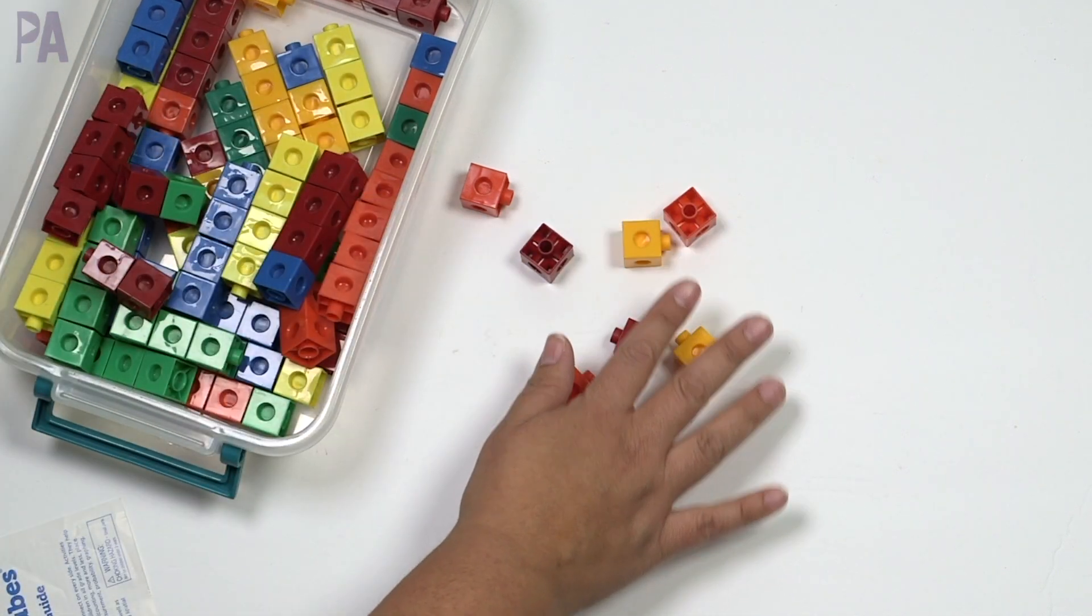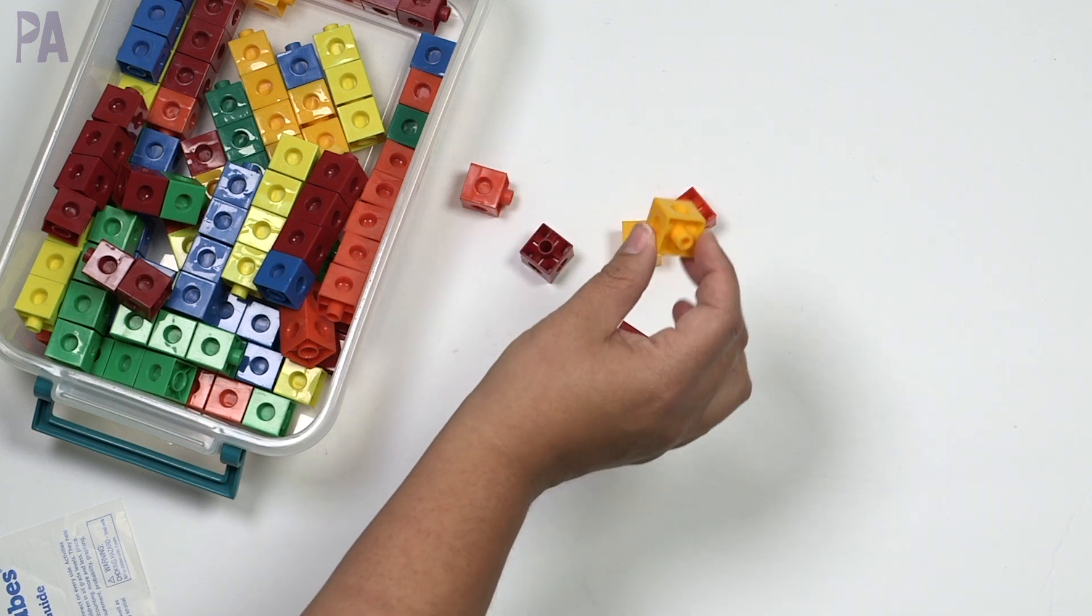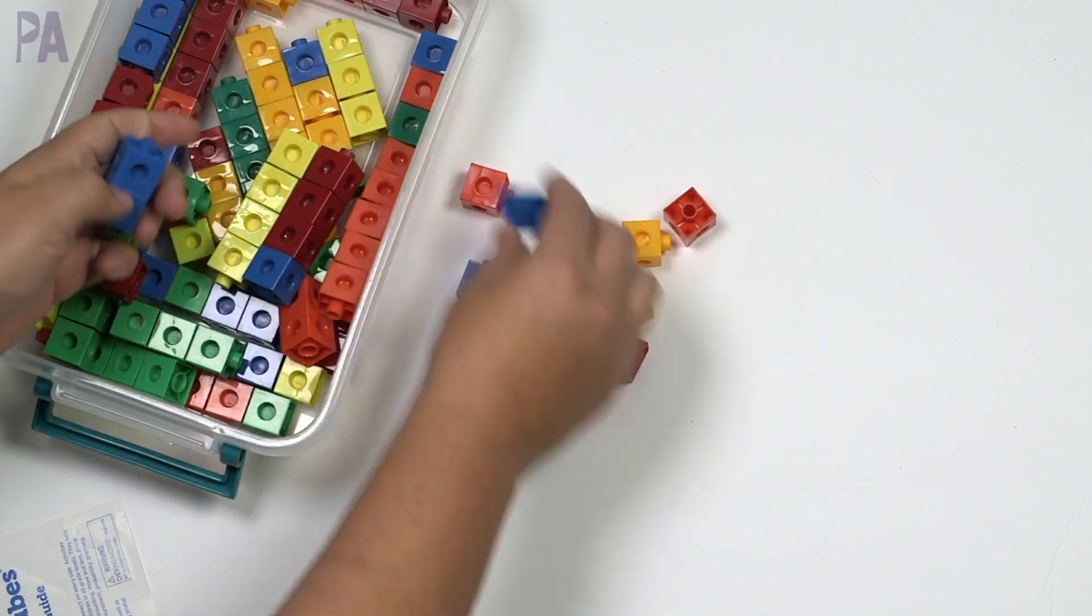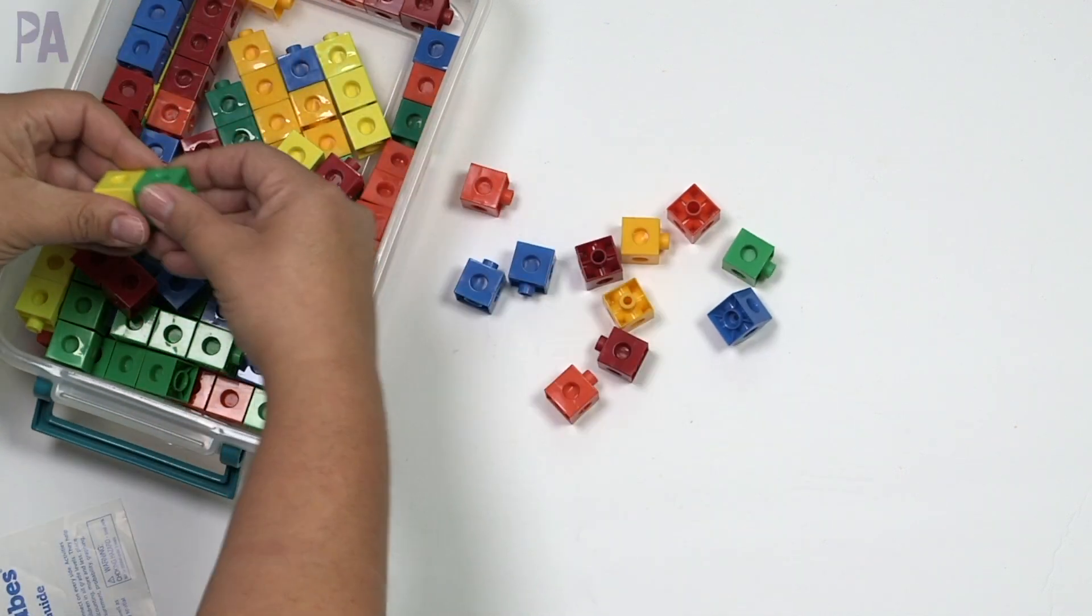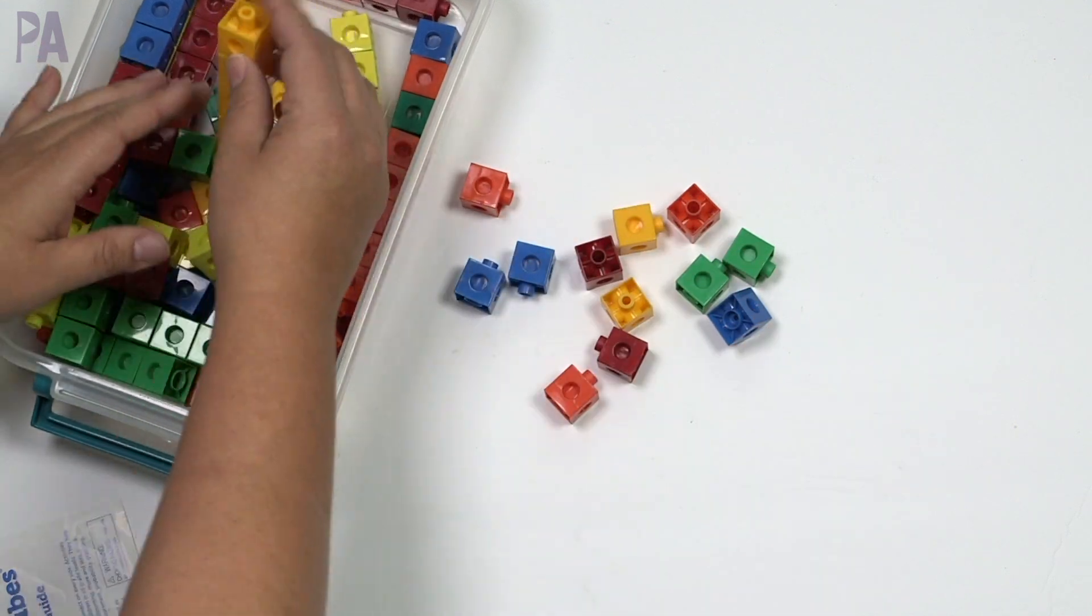For us, we're going to be using them for sorting. So when you're working with toddlers, you need to keep in mind their age, if they're oral, if they put things in their mouth. These are probably too small if your child is putting things in their mouth. Use your best discretion. Always, always, always supervise. But I'm going to use these for an example. If you have bigger objects for toddler hands, that could be an option too.